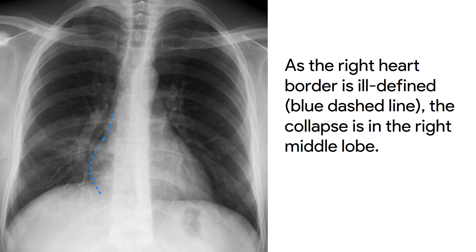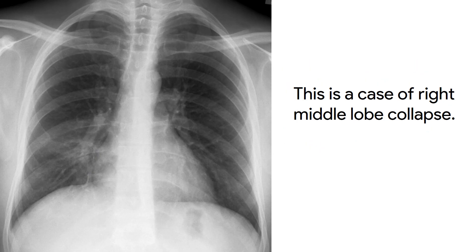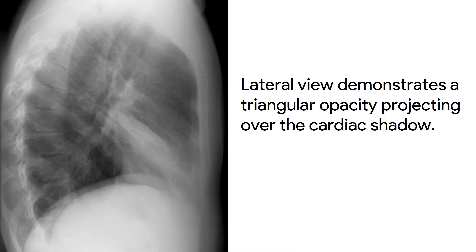As the right heart border is ill-defined, the collapse is in the right middle lobe. This is a case of right middle lobe collapse. The lateral view demonstrates a triangular opacity projecting over the cardiac shadow.